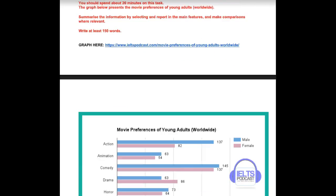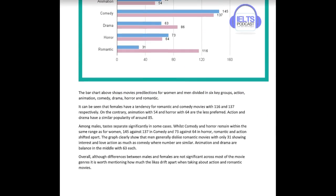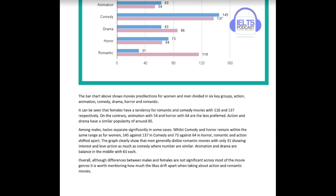Now let's look at your second essay — movie preferences. The bar chart shows movie predilections for women and men divided into six key groups: action, comedy, drama, horror, and romantic. 'It can be seen that females have a tendency for romantic and comedy movies with 116 and 137 respectively. On the contrary, animation with 54 and horror with 64 are the less preferred. Action and drama have a similar popularity of around 85.' Among males, tastes differ significantly in some cases.